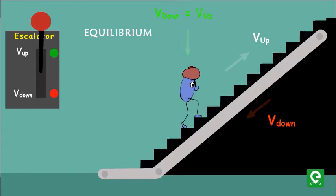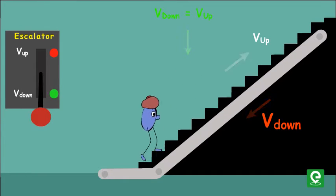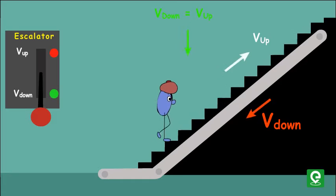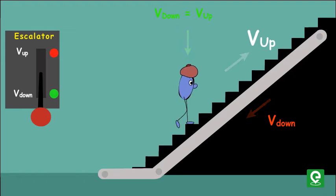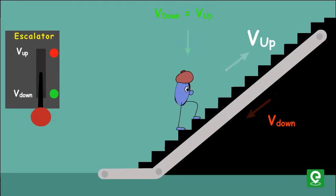Suppose your mischievous friends decide to increase the speed of the escalator. In order for you to still remain at the same point, you will have to increase your speed to match the speed of escalator and attain the dynamic equilibrium again.